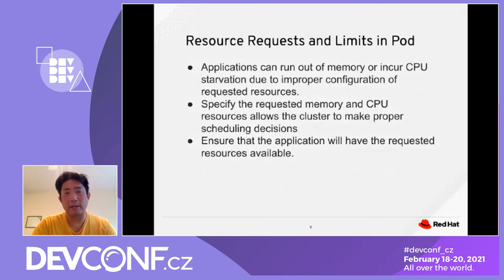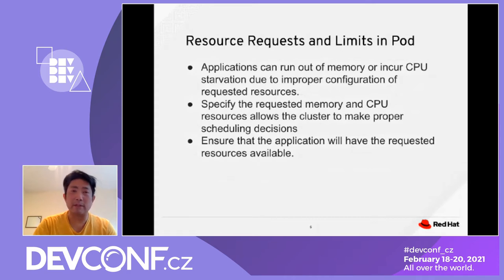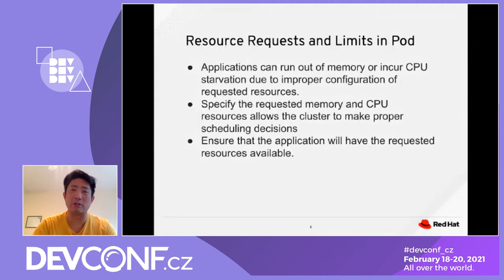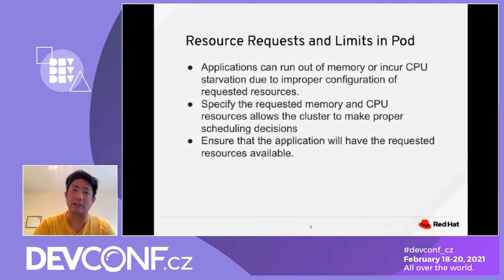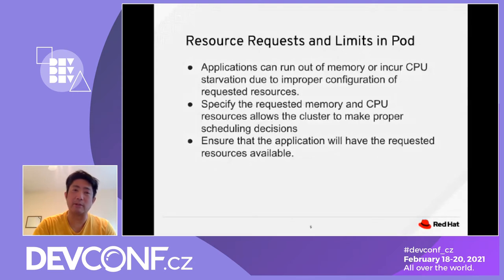Another suggestion is to keep the resource requests and limits properly set. A lot of the time we have applications running out of memory and incurring CPU starvation because of improper configuration — asking for too many resources that you don't need. Specify a request memory and CPU resource limit to the cluster to make proper scheduling decisions, so we can ensure the application will have the requested resources when they are available.